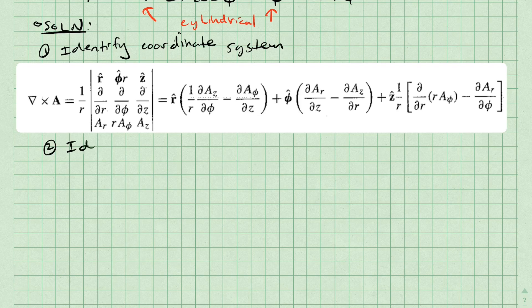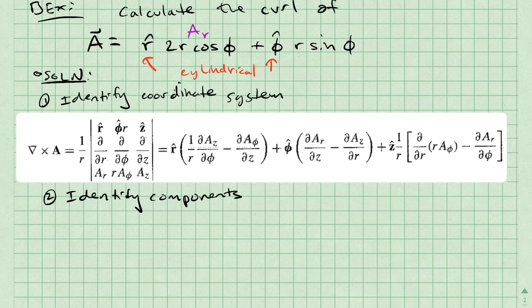The second step is to identify the r, phi, and z components of the vector field. I'll denote these as a sub r, a sub phi, and a sub z. We notice that there is no component for a sub z, so that component is zero.